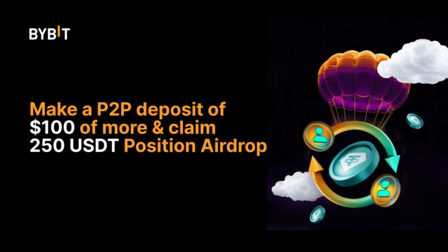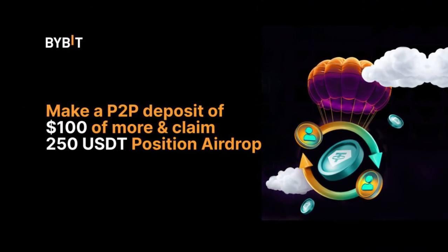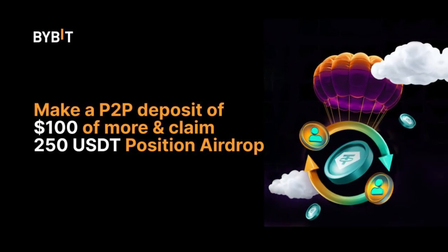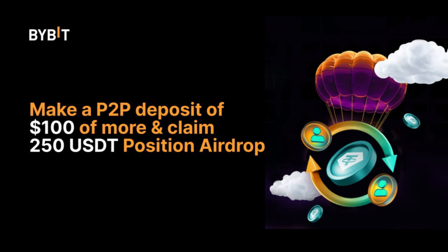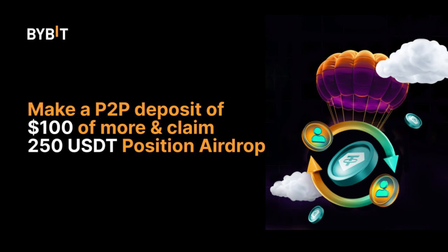If you're signing up for a new Bybit account for the first time, you need to make a deposit, and we recommend using the P2P marketplace on Bybit. If you make a deposit of at least a hundred dollars into your Bybit account, you instantly get a position airdrop of 250 USDT. You can use this 250 USDT position airdrop to trade on Bybit derivatives, and Bybit handles the margin for that trade, so you get free money to trade with on the derivatives platform.